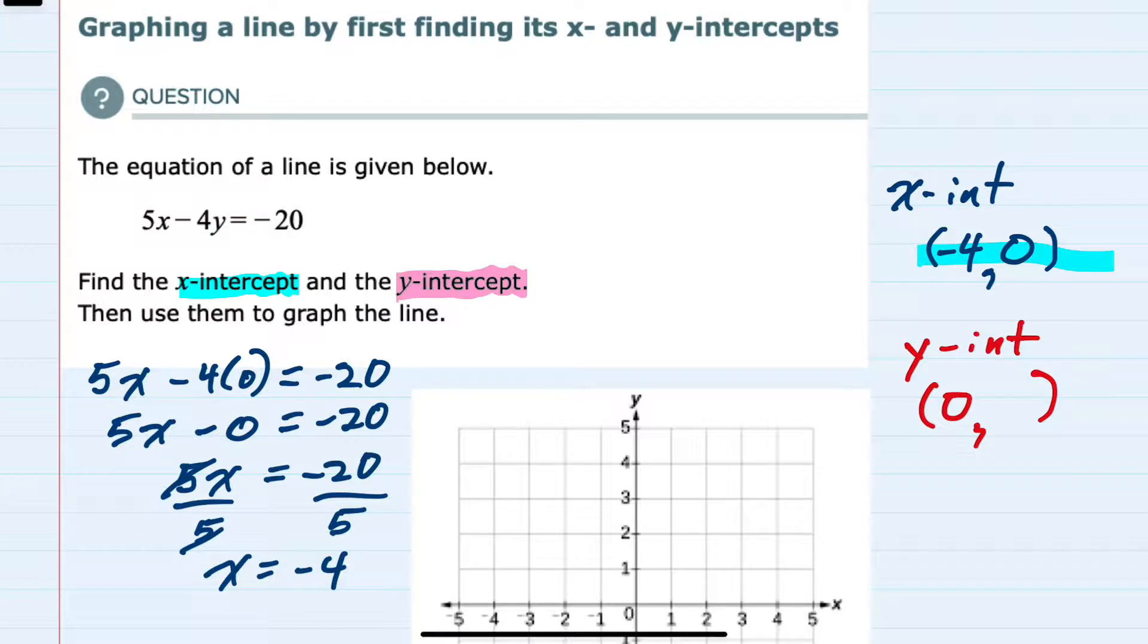So we go back to our equation, this time replacing x with 0 and solving for y. We would have 5 times 0 minus 4y equals negative 20. 5 times 0 is 0, so minus 4y equals negative 20.